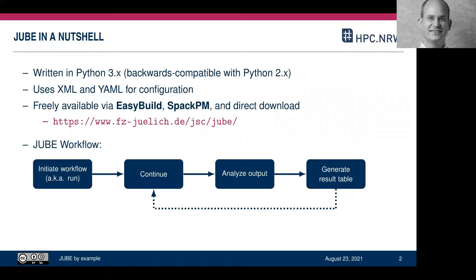JUBE is a workflow management system. The basic way to run your workflow is to initiate it with 'jube run', which starts the workflow you've previously defined. It either completes directly, or you have asynchronous steps that require continuing. Even while the workflow isn't fully complete, you can already start analyzing completed parts and generate a partial result table, continuing until the full workflow is done and you have the final analysis and output.